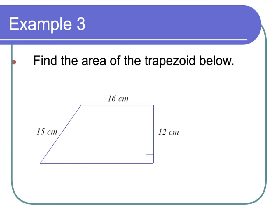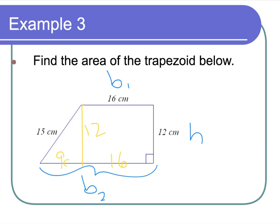Find the area of the trapezoid below. This is not isosceles, but it is a trapezoid — we'll assume the ones that look parallel are parallel. I need to find base 2. If I drop an altitude right here, this is 12, and I've created a rectangle, so that means this side is 16. I've got a something-12-15 triangle, and if you remember, this is a 3-4-5 that's been tripled, making the missing side 9 centimeters. So the entire base length here is 9 plus 16, which is 25.